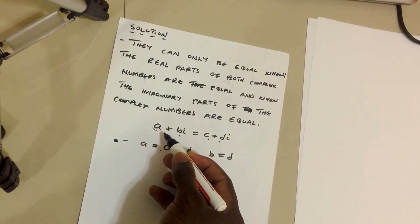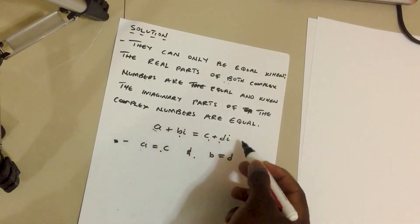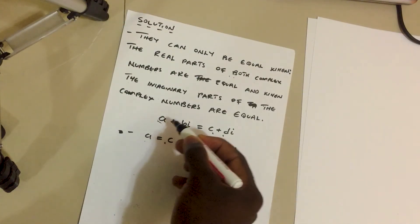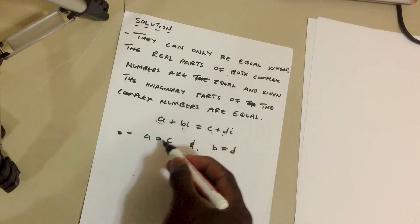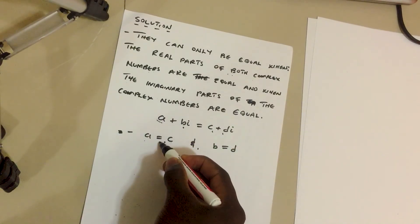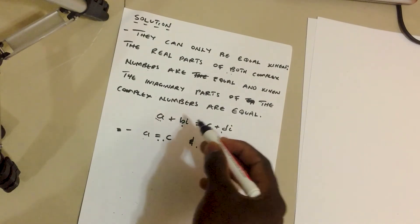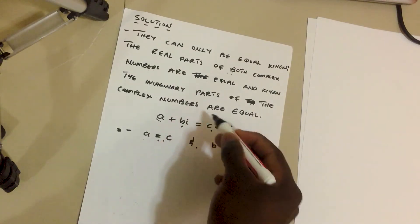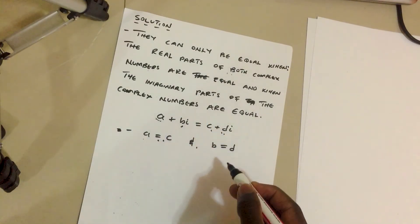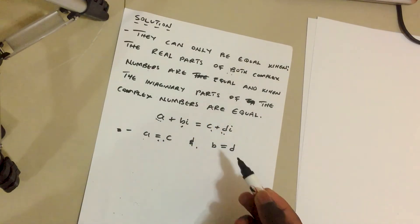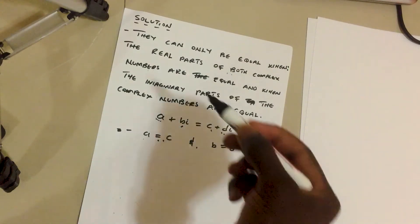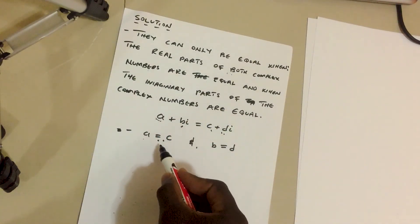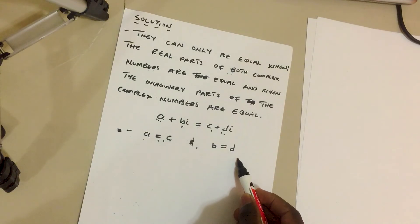So a plus bi equals c plus di only when the real parts — that is, A and C — are equal, and when the imaginary parts — that is, B and D — are also equal. This is the only condition under which we can say both complex numbers are equal.